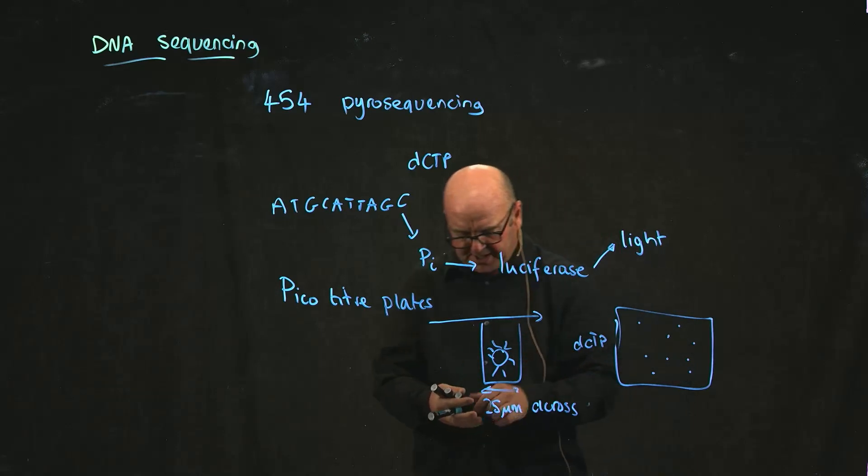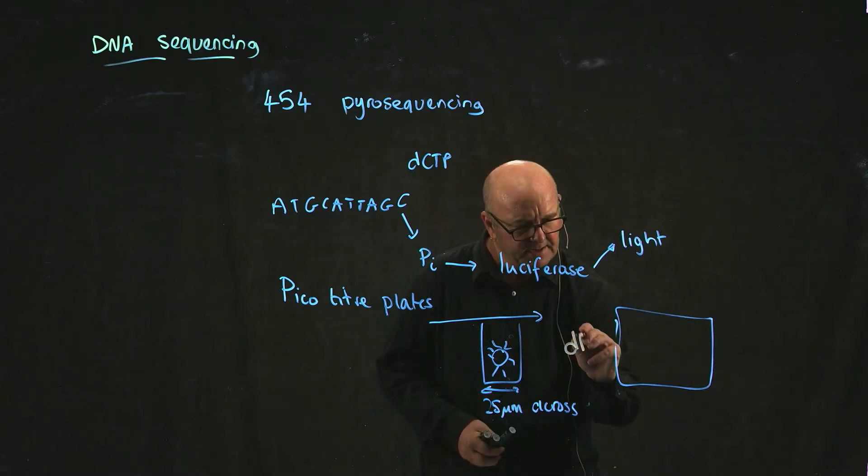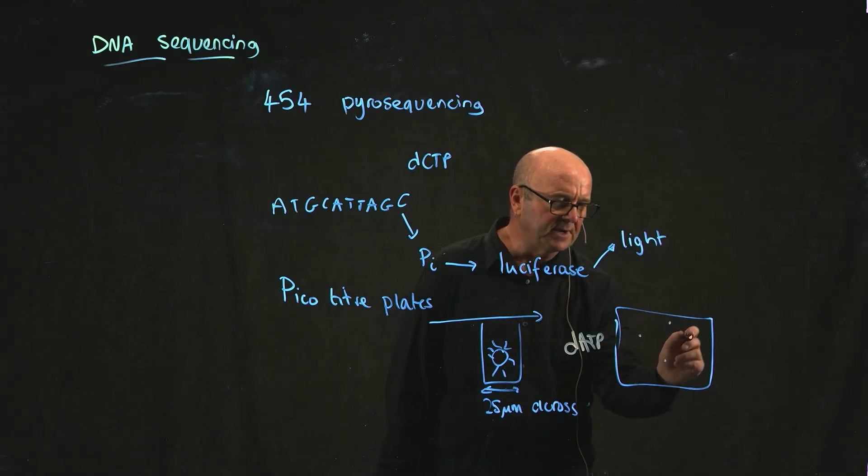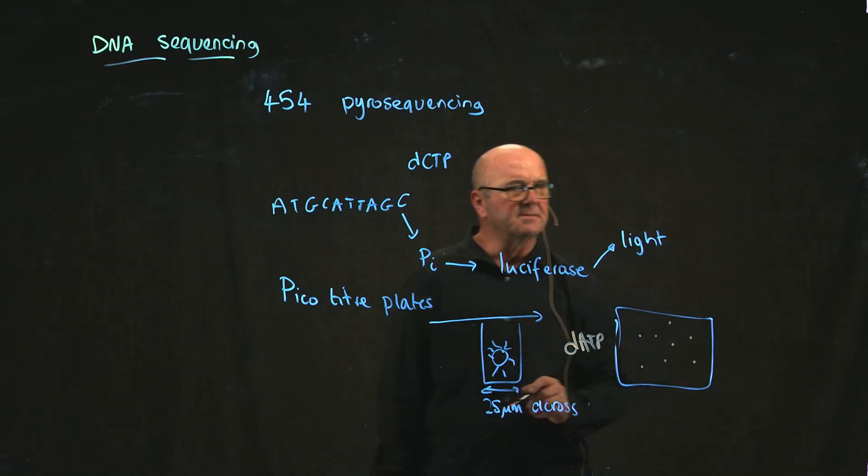Then you wash that off, then you add dATP, and every well where you add an A gives you a flash of light.